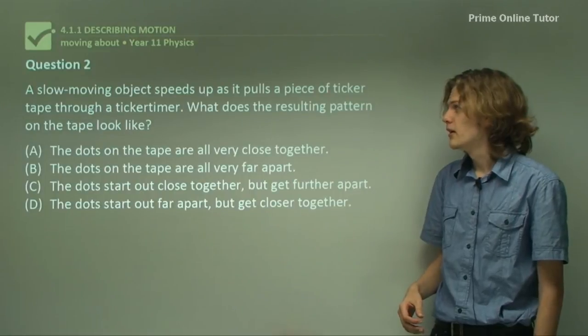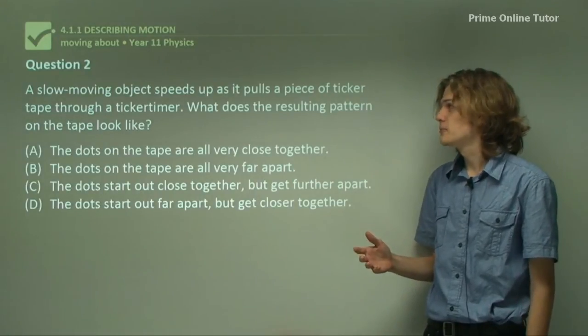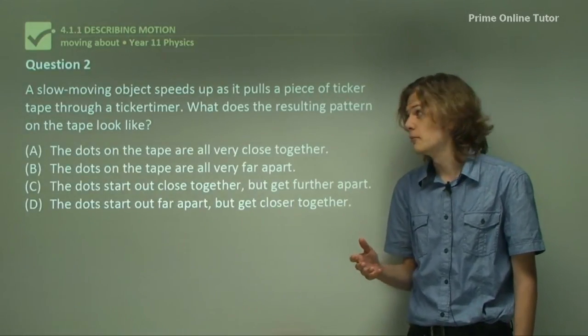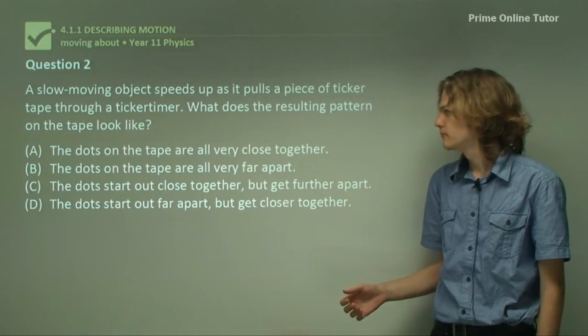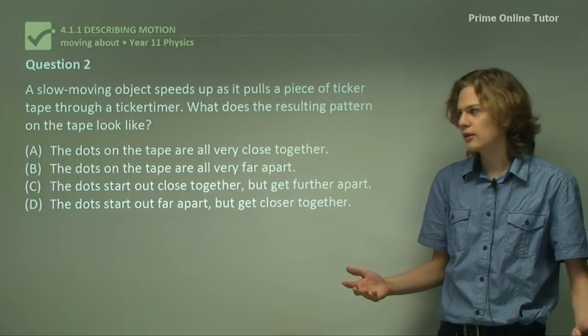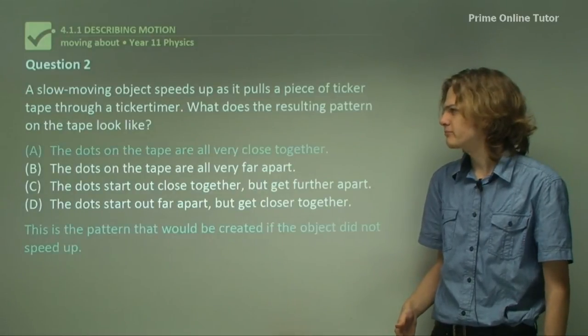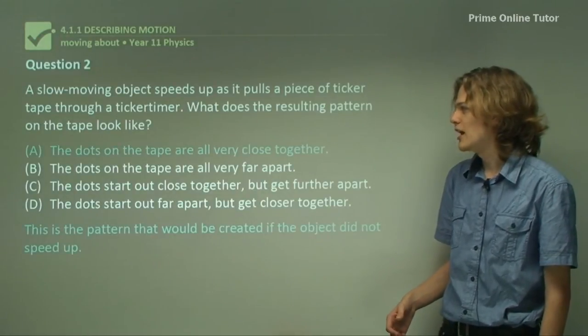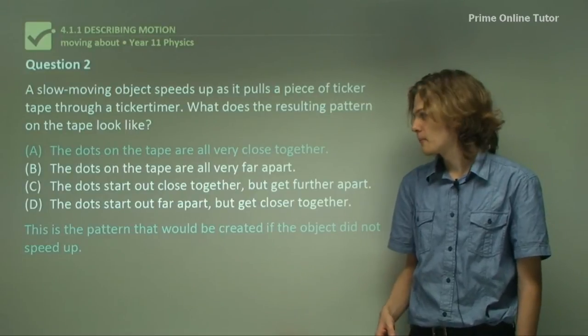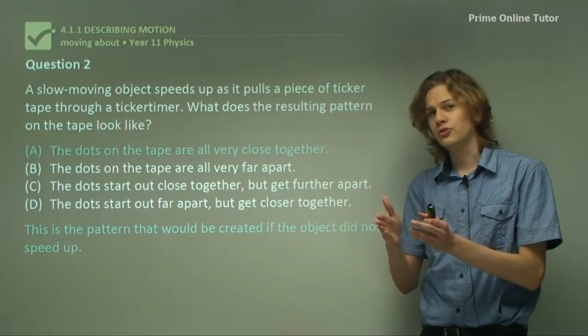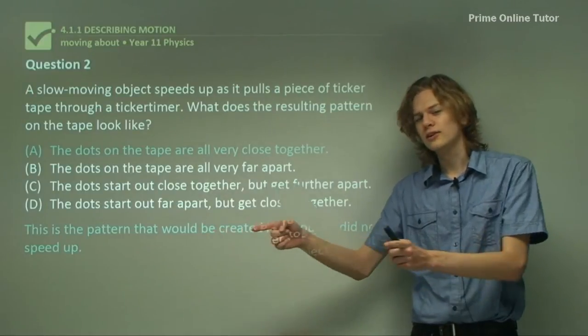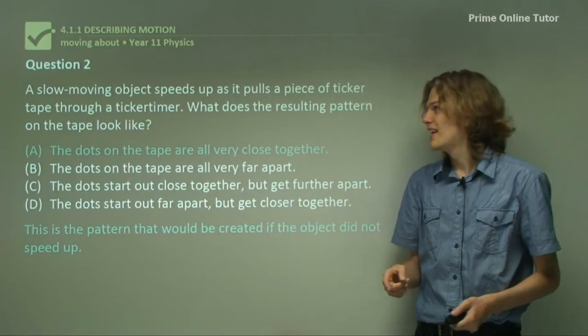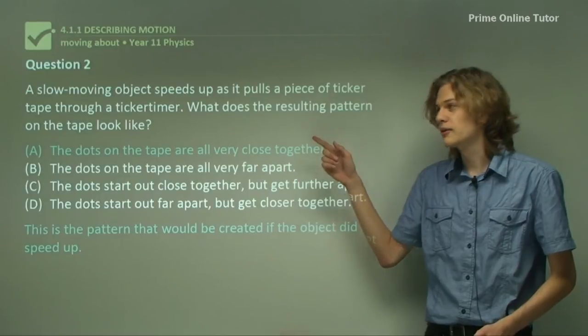Question two. A slow-moving object speeds up as it pulls a piece of ticker tape through a ticker timer. What does the resulting pattern on the tape look like? Well, let's take a look at some of the options that we have. Option A, the dots on the tape are all very close together. Now, if they were all very close together, it means that the ticker tape would be moving through the ticker timer quite slowly at a constant speed. And as we can see, that's not what the motion looks like. So A can't be right.